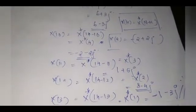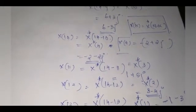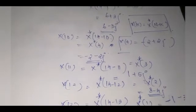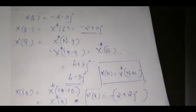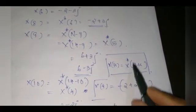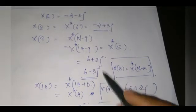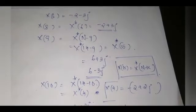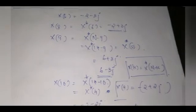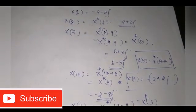So these are the remaining DFT points. This is how you can find the remaining samples when the first points of your DFT are given, by applying the complex conjugate property X(k) = X*(N − k). This property holds because the given sequence is a real sequence, so X(k) = X*(N − k).